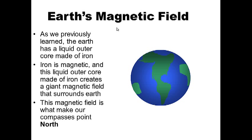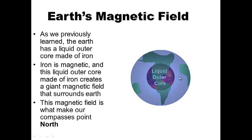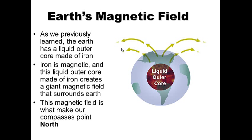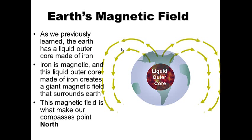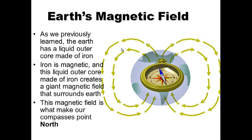The earth has a liquid outer core made of iron — it's molten and flowing. Iron is magnetic, and this liquid outer core made of iron creates a giant magnetic field that surrounds earth. This magnetic field is what makes our compasses point north.